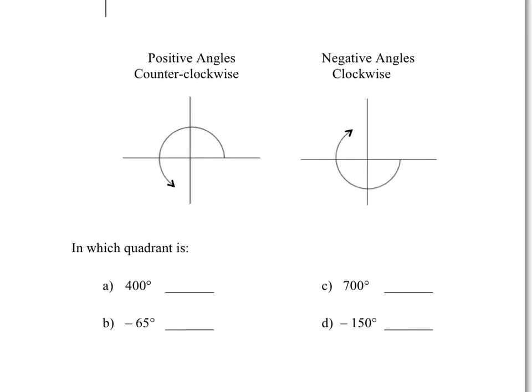So in which quadrant is 400 degrees? Well, how much is a full circle? A full circle is 360, right? So 400 degrees, you would go 360, and then you'd go 40 more. So this angle would be in quadrant one. Often we use Roman numerals to represent quadrants.